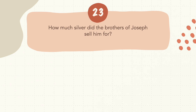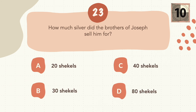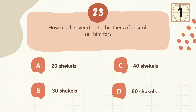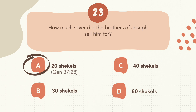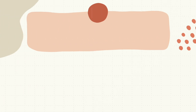Question 23: How much silver did the brothers of Joseph sell him for? The correct answer is A, 20 shekels.